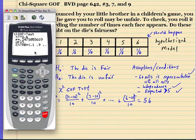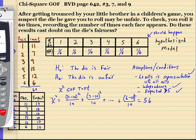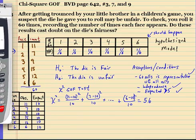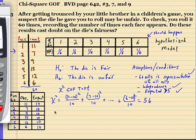And our p-value, let me move this out of the way. So our p-value, this is our decision-maker. Our p-value equals the probability that the chi-squared will be greater than 5.6. And that comes out to be 0.347.